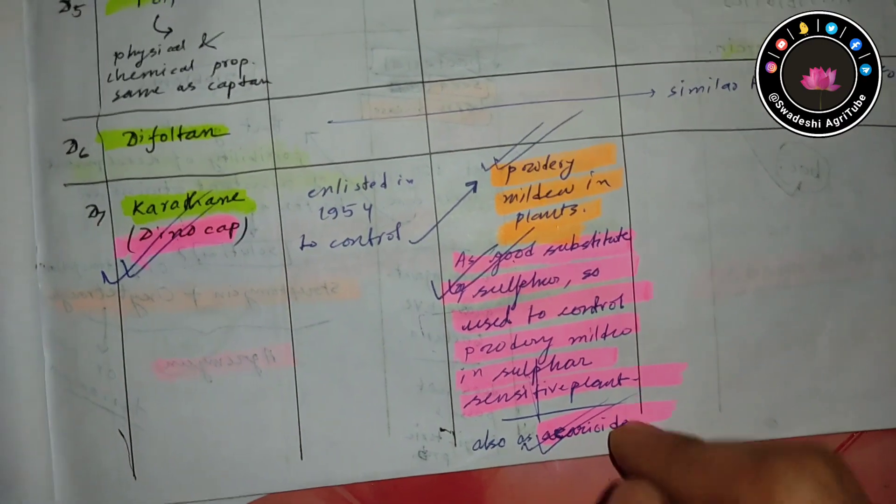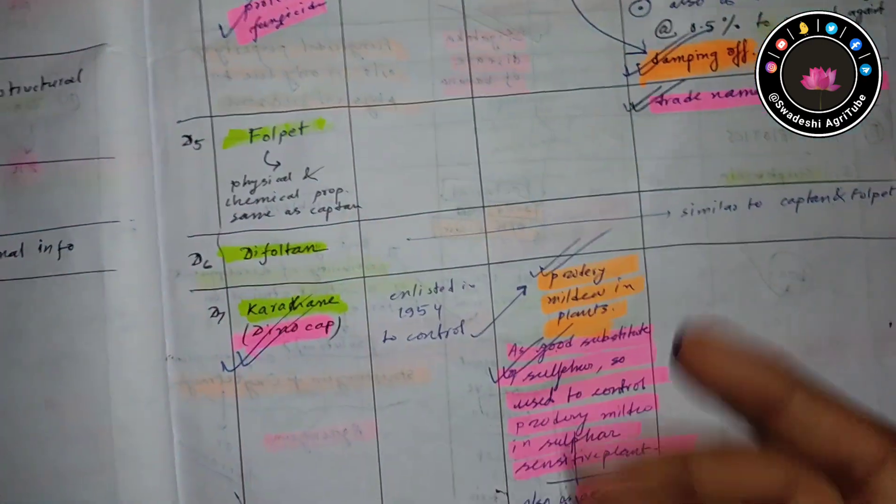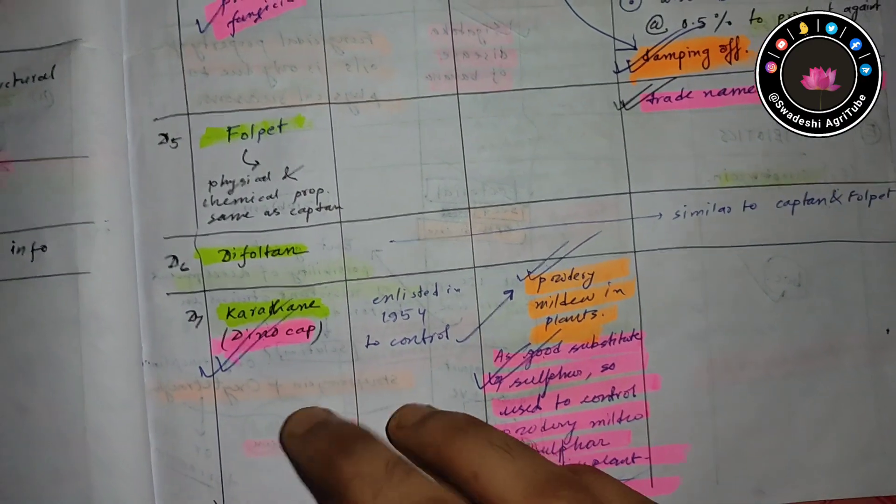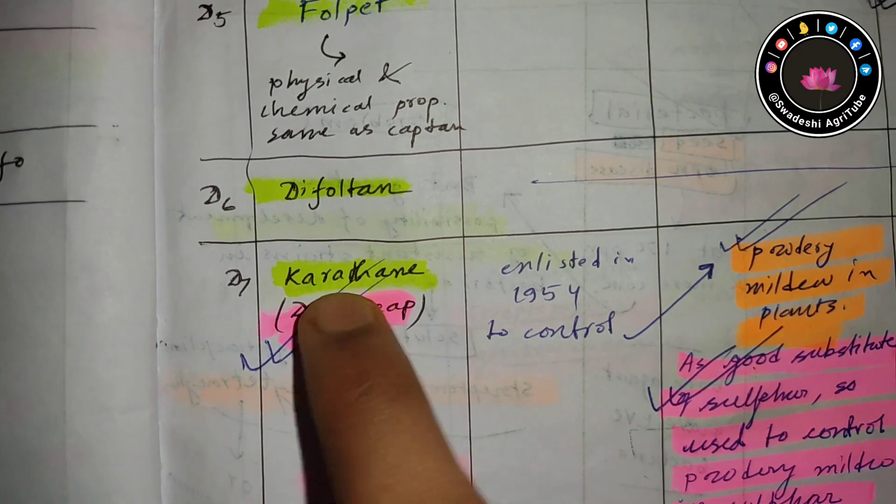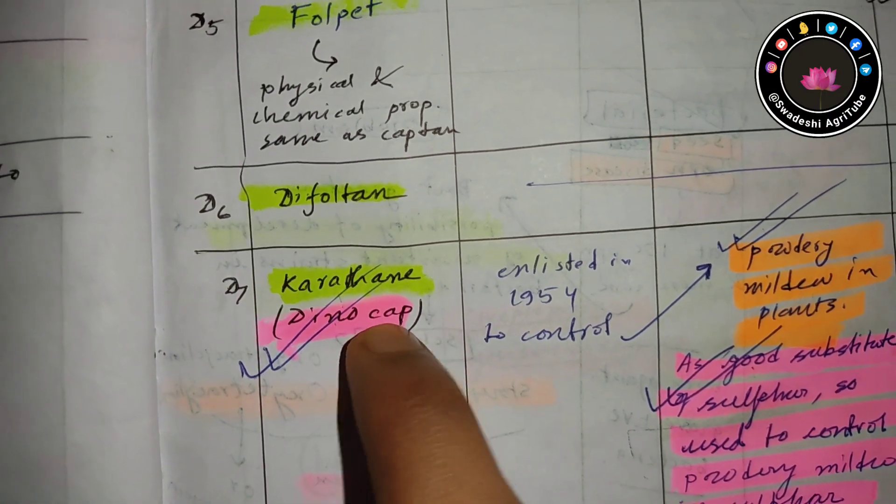Karathane's trade name is dinocap. This is very much important. The eighth organic fungicide is pentachloronitrobenzene—PCNB.